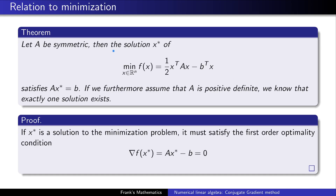The proof is quite easy. Assume that x* is a solution to our minimization problem. Then it must satisfy the first-order optimality conditions: the gradient of F must be zero. Plug in x*, and you end up with A x* minus b equals zero. Bring b to the other side and you get the result. From now on, we assume that A is symmetric and positive definite.